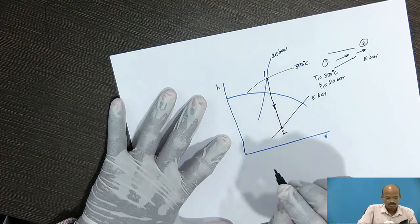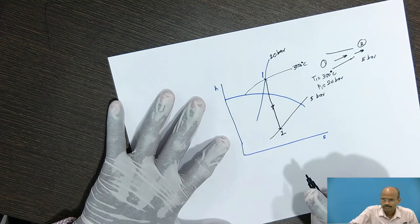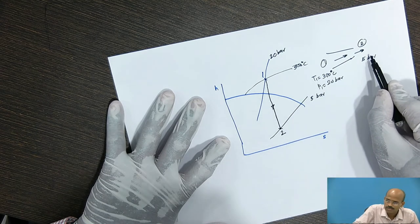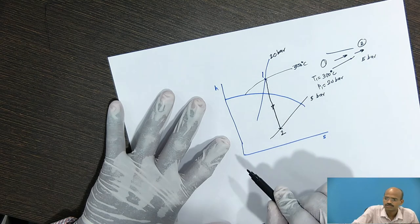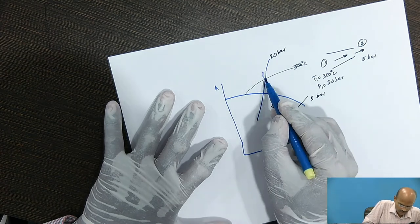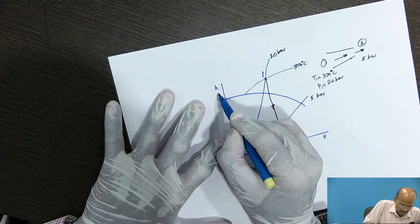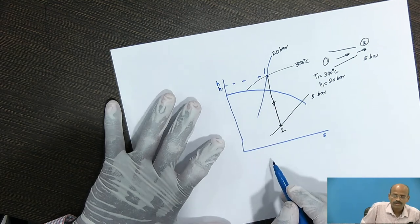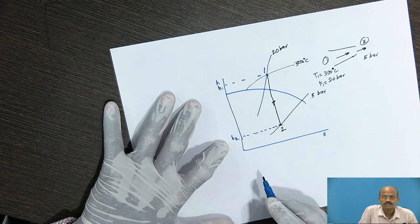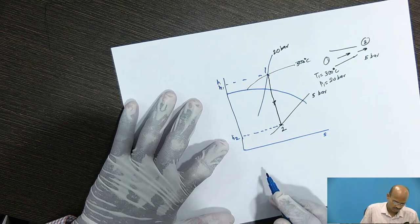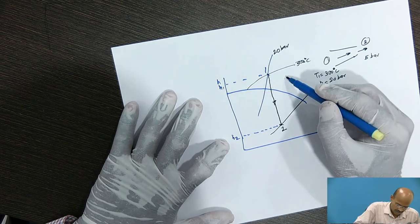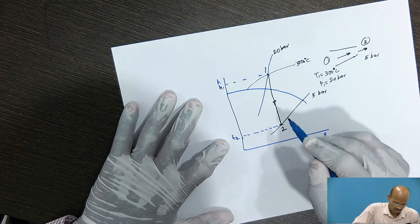Mollier's chart is very useful. If you know any two inlet properties and one outlet property, you can represent the process on the Mollier's diagram and read corresponding properties. For example, taking the projection from point number one gives the enthalpy H1, and drawing a horizontal projection from point two gives H2. This is the graphical method of solving numericals on the steam nozzle. Similarly, I can read the specific volume of steam at point number two.